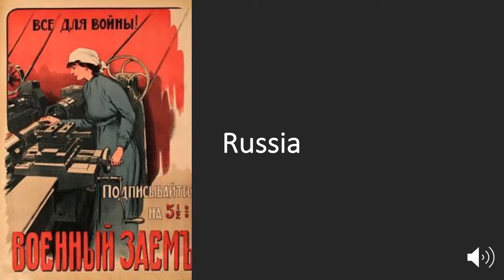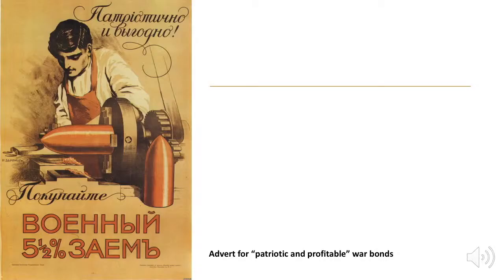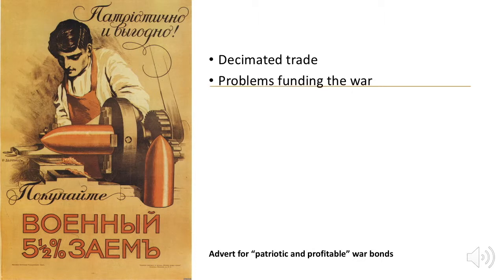Let's talk about Russia. Russia's trade was decimated after the closing of the Turkish Straits by the Ottomans. With the largest population in Europe — almost double that of Germany — manpower wasn't the issue for Russia that it was in other countries. But they were broke and had no money, so funding the war was problematic. Every country sold war bonds to raise cash in order to pay for the war.